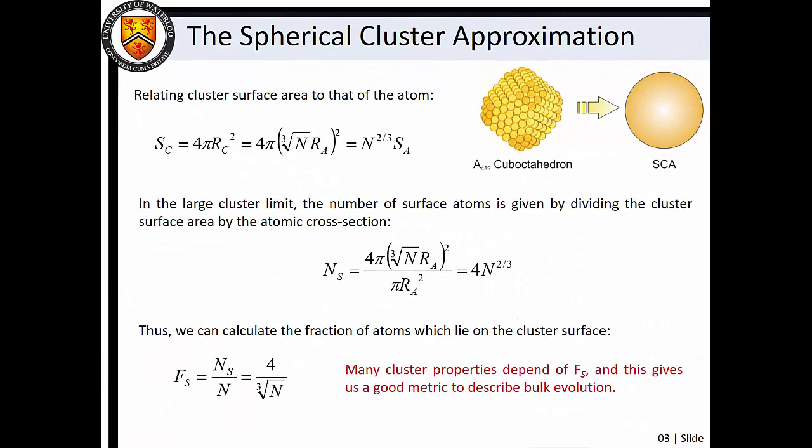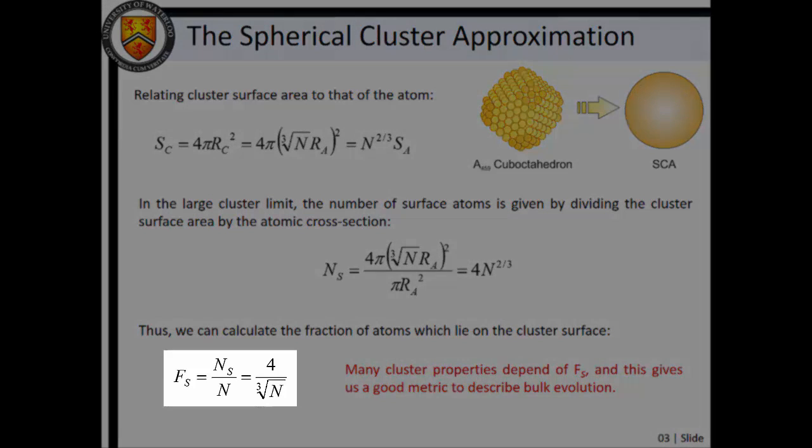The SCA provides a simple relationship between cluster geometry and the geometry of the constituent atoms. With a little algebraic manipulation, we find that the SCA predicts that the fraction of atoms which lie on the surface of a cluster is 4 divided by the cube root of n.